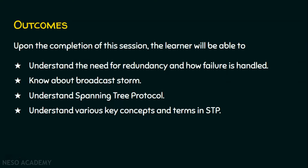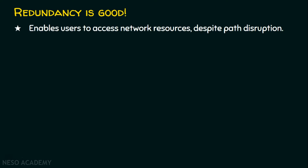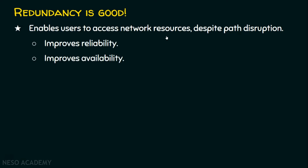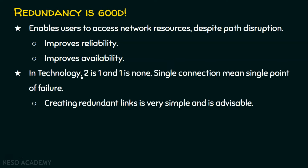Let's start with the redundancy concept. Redundancy is always good because it enables users to access network resources despite path disruption. If there is only one path between the sender and the receiver and that path fails, the sender will not be able to reach the receiver. Redundancy improves reliability and availability. In technology, two is one and one is none, because a single connection means it is a single point of failure.